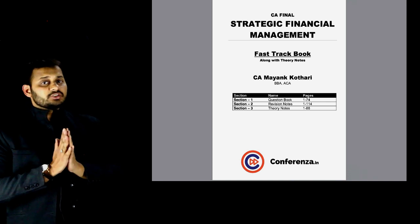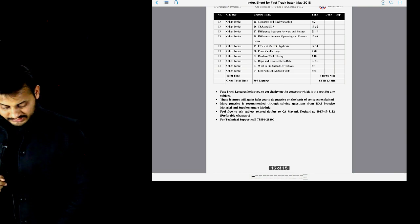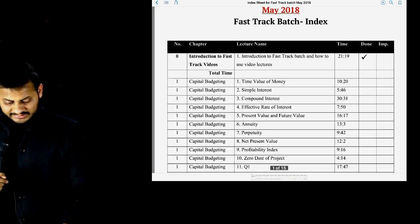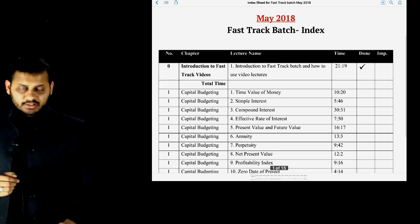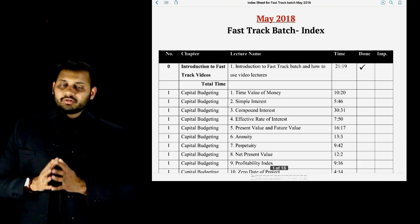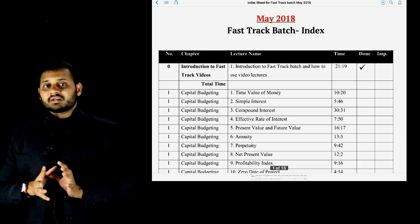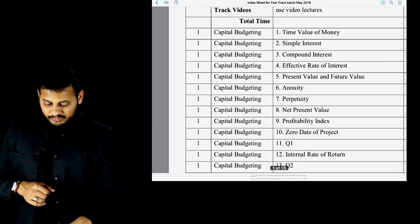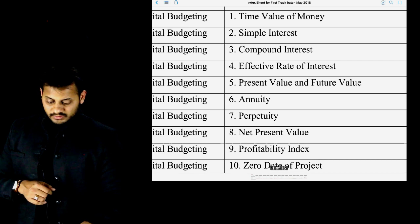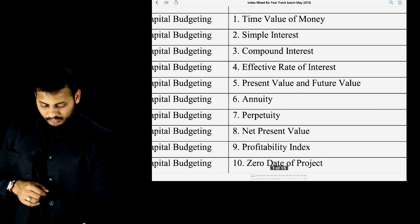You have 309 videos and an index sheet has been provided. As each video finishes, mark it — 'done' or 'important' — if you feel a video is important, just mark it so that all these things will be useful during revision. The time for each video is also given, so you can see, for example, that time value of money is covered in many videos at the start.